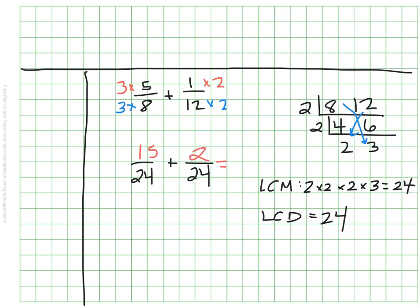From there, I have everything I need. I just need to add my numerators, and I keep my denominator as is. The sum of 5 eighths plus 1 twelfth is 17 24ths.